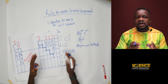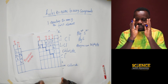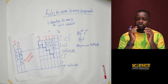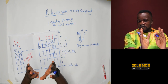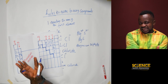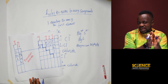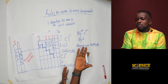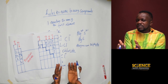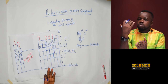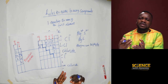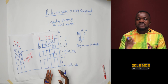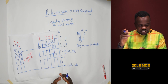We can have a whole lot of binary compounds and name them, because they are made up of two atoms. The first element maintains the name of the metal, and the second non-metal element has its last two, three, or four letters replaced with '-ide'.